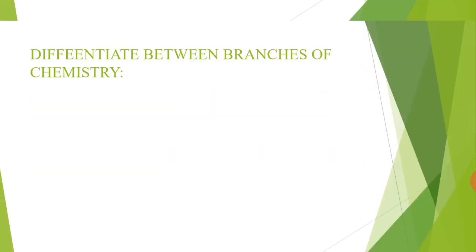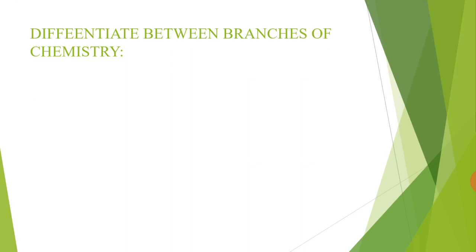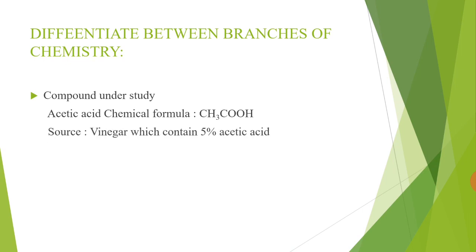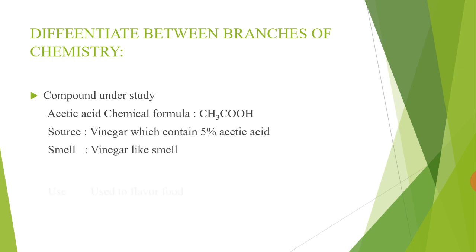Now, how can we differentiate between different branches of chemistry? Let us consider the compound acetic acid. Its formula is CH₃COOH. Its source is vinegar, which contains 5% acetic acid. Its smell is vinegar-like, and it is used to flavor food.